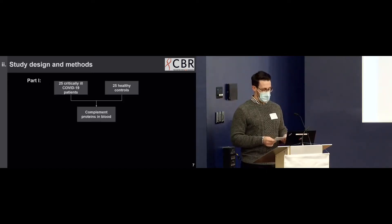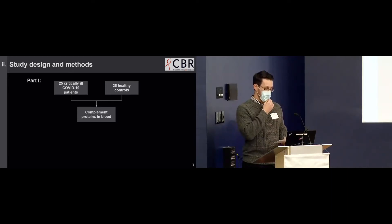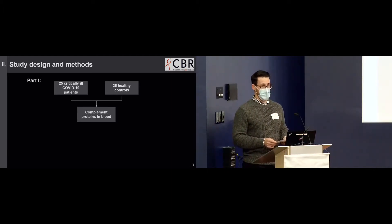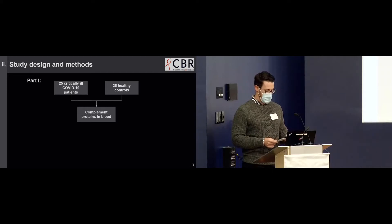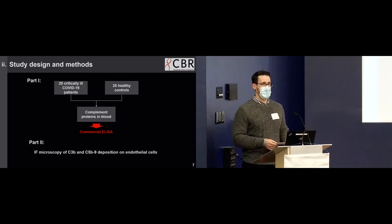In part one, we studied 25 critically ill patients admitted to Vancouver General Hospital between March and May of 2020. Blood was taken from an existing arterial line after written informed consent was obtained for up to 21 days post-ICU admission. In comparison, 25 general population healthy controls were analyzed. Complement analytes were assayed by commercial ELISA kits and compared to clinical measurements of respiratory status and kidney function. In part two, we layered serum from critically ill COVID-19 patients and healthy controls onto endothelial cells and measured complement attack by immunofluorescence microscopy.